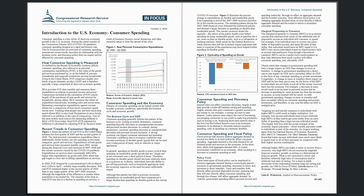Recent Trends in Consumer Spending. Figure 1 shows the pattern of real PCE in the United States between the first quarter of 2005 and the second quarter of 2020. The total personal consumption expenditure data is additionally shown broken out into spending in two main categories: goods and services. Expenditures of both goods and services have increased steadily since 2005, except during the financial crisis and recession of 2007–2009 and the current recession caused by the COVID-19 pandemic. Expenditures on services were consistently 30% to 50% higher than expenditures on goods until 2020, when that gap began to close due to falling expenditures on services.